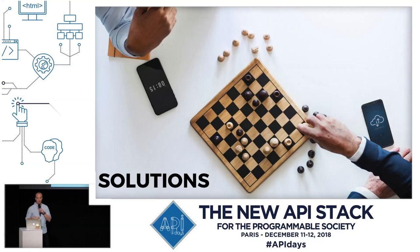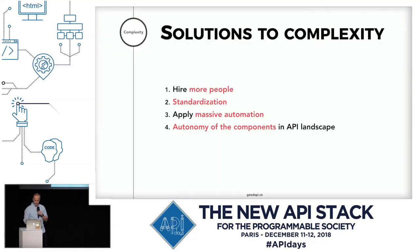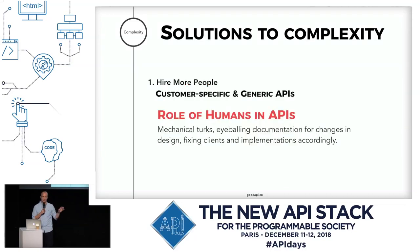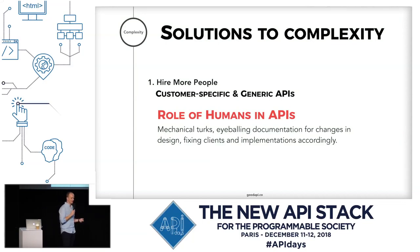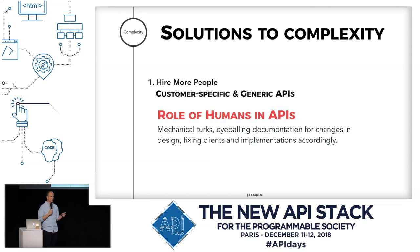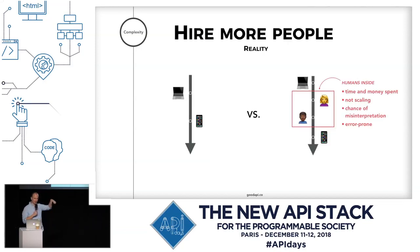Let's quickly go through some solutions. Hiring more people, standardization, automation, and autonomy of the components are the four I propose. Hiring more people is the default — what we're doing right now: hiring more engineers to handle increasing demand for APIs. We have engineers eyeballing documentation, writing documentation, reading documentation, and programming computers for documentation. We think APIs are computer-to-computer, but in reality there are humans hidden inside. As such, this does not scale and is definitely error-prone.